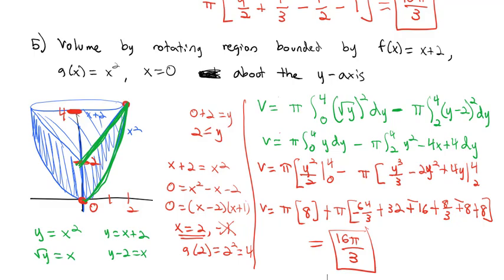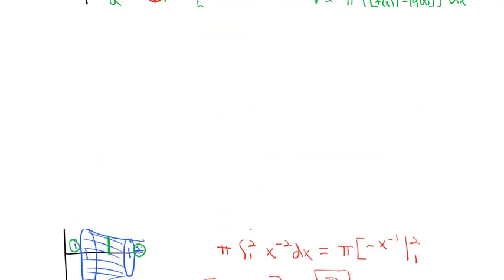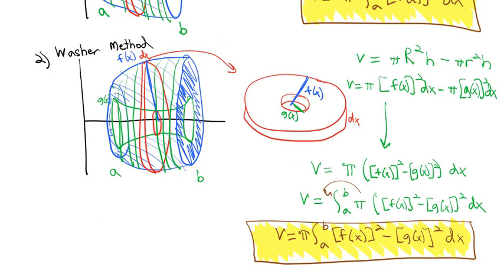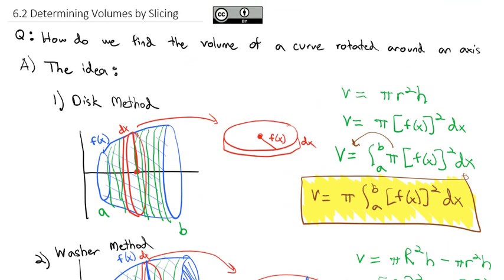That's what I want you to take a look at today for our assignments. We are doing the disk method and the washer method as we find the volume of a region formed by rotating one or more graphs around either the x-axis or the y-axis. Our general formula is the same: π times the integral of the function squared dx. Try some of these and we'll talk about them more in class.